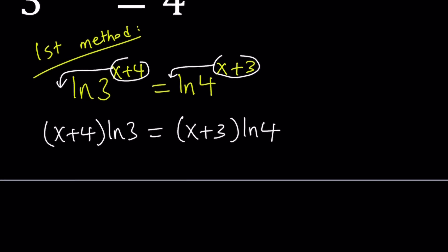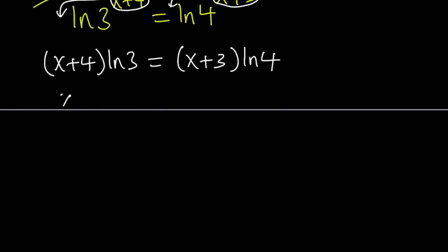Now ln 3 and ln 4 are constants and I want to solve for x. So let's go ahead and distribute and then put the x terms together because we're trying to solve for x. Here we get x ln 3 plus 4 ln 3 equals x ln 4 plus 3 ln 4. Now, it doesn't matter which side you choose, but since ln 4 is greater than ln 3, I want to put the stuff on the positive side.